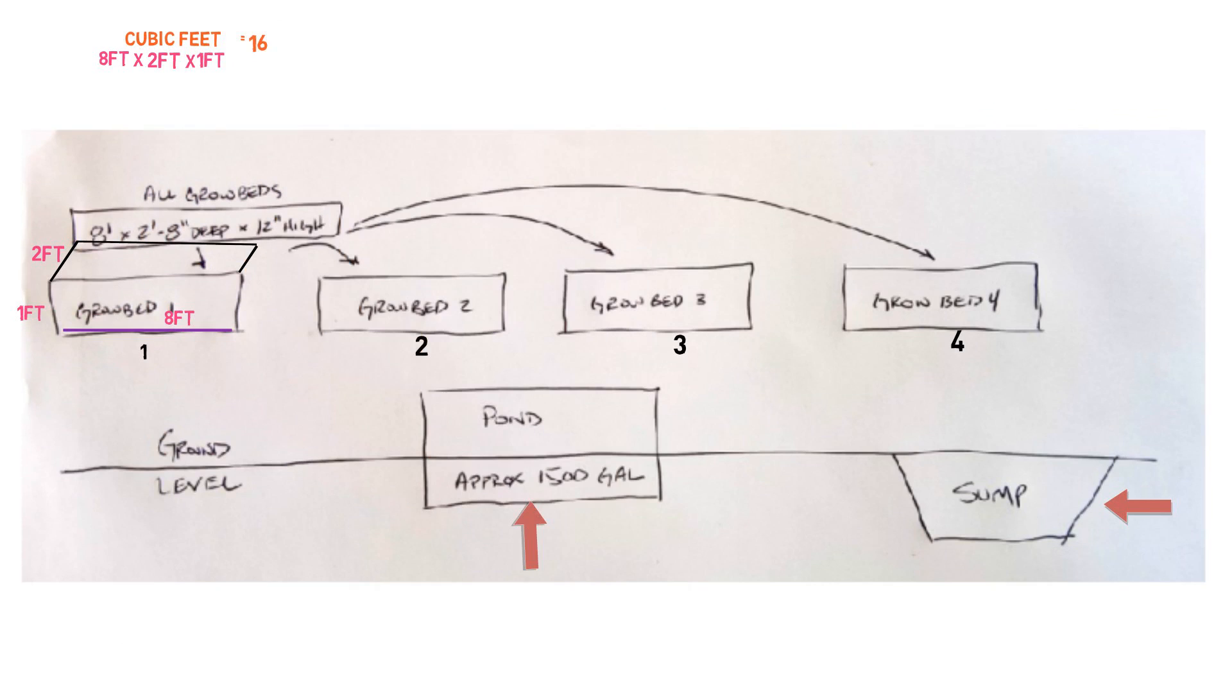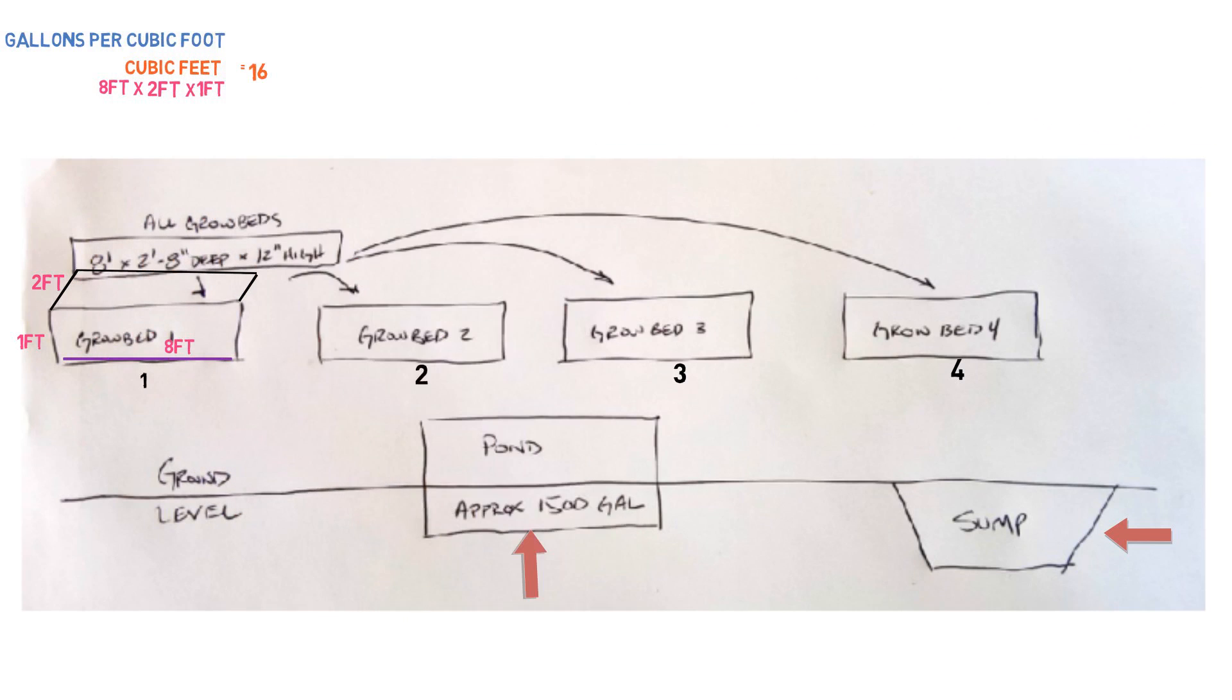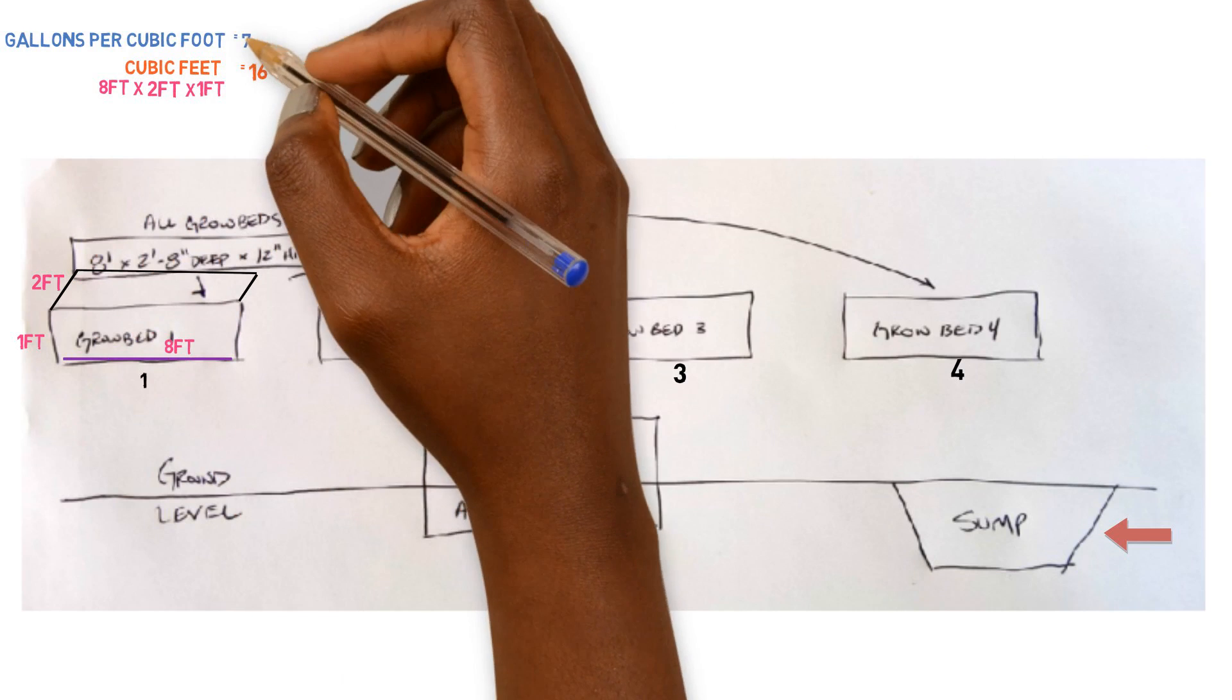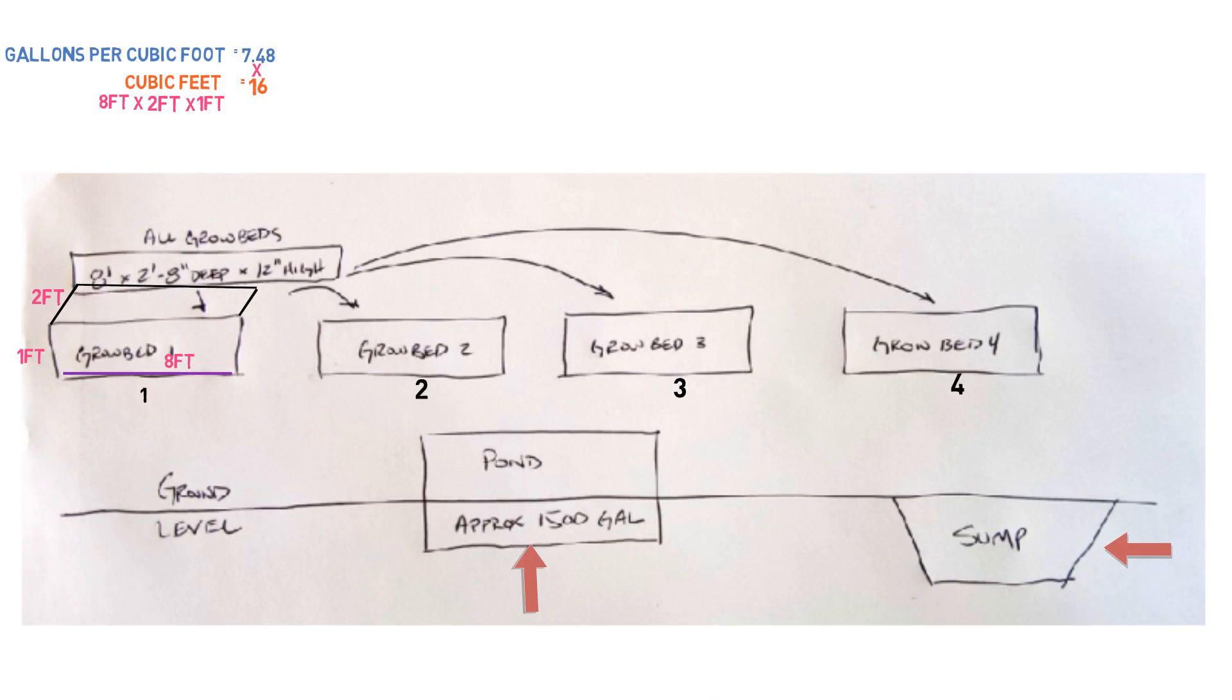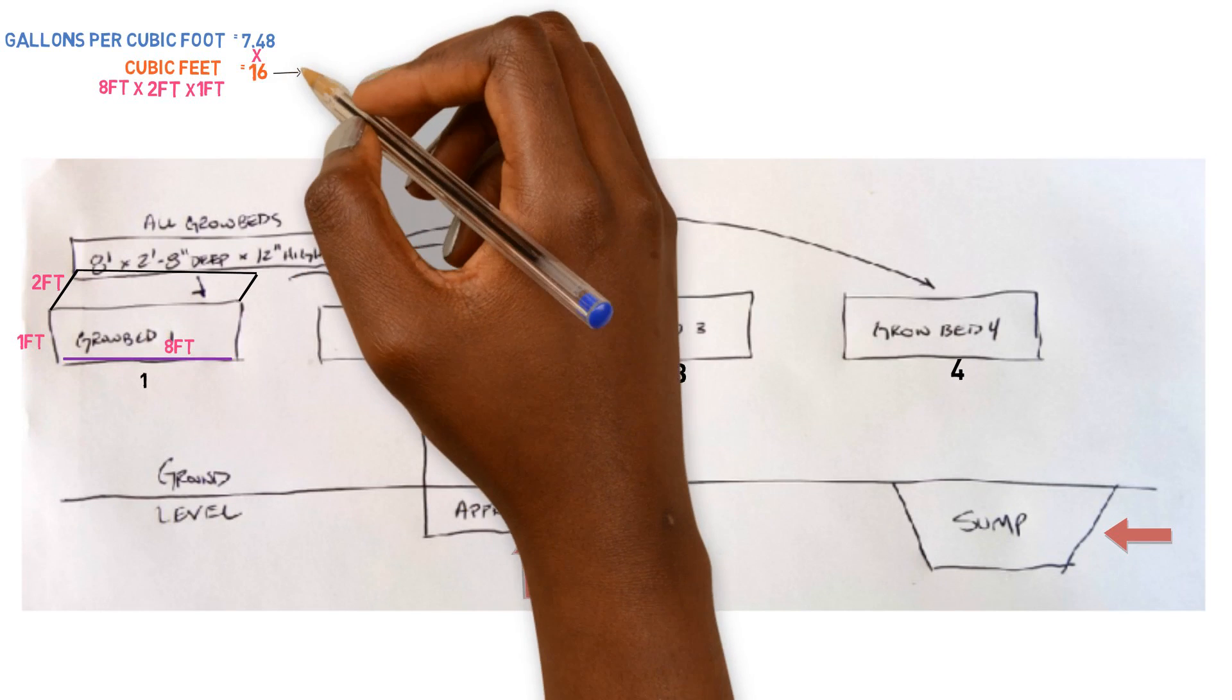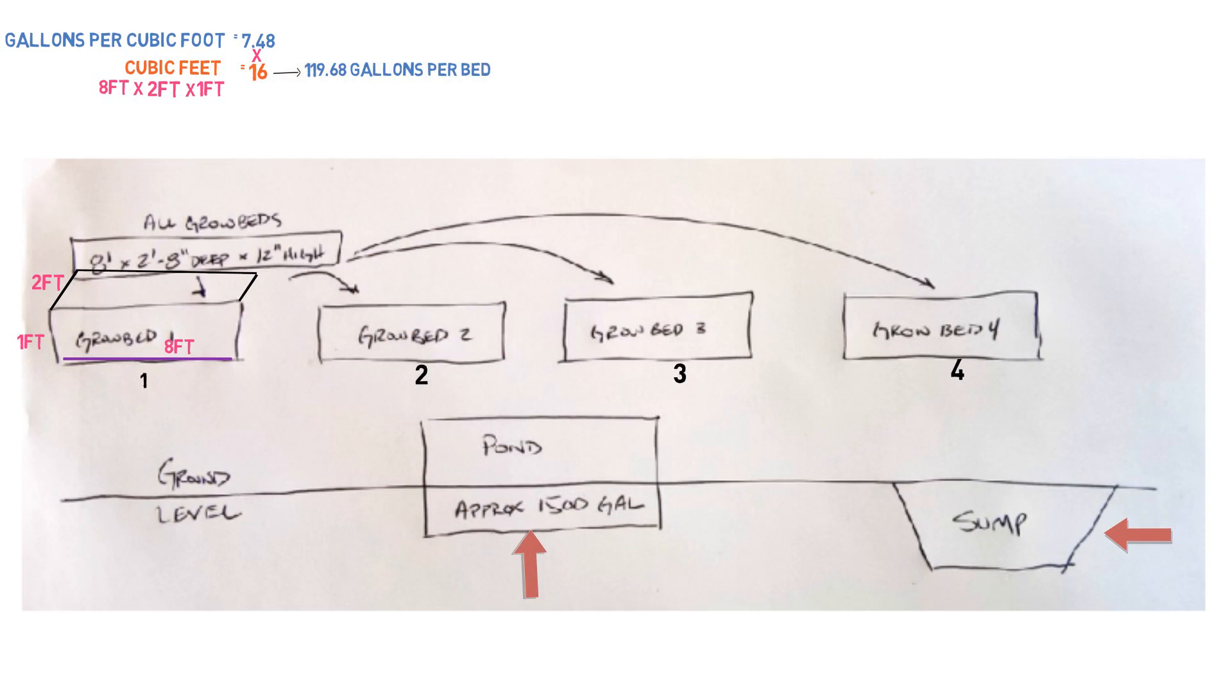So what we have to do now is we have to figure out how many cubic or how many gallons, excuse me, how many gallons are inside of one cubic foot. And that comes out to about 7.48 gallons per cubic foot of area. So what we need to do is take that 7.48 and we need to multiply that by the amount of cubic feet in one of these beds. So 16, 7.48 times 16, and that'll give us 119.68 gallons for each one of these beds. If we were to fill it up all the way completely, each one of these beds.